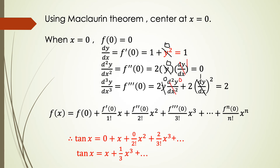Using the Maclaurin theorem centered at x equal to 0 to get the expansion of tan(x). When x equal to 0, f(0) equals 0. We substitute 0 into the first, second, and third derivative expressions. The first derivative at 0 equals 1. The second derivative at 0 equals 0. The third derivative at 0 equals 2.